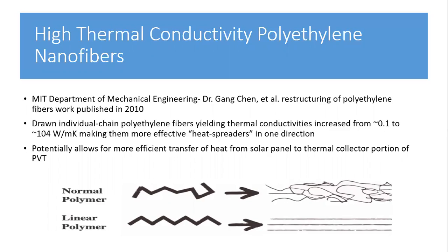This gives the polyethylene nanofibers very interesting material properties. Most importantly, this drives their thermal conductivity from the order of about 0.1 watts per meter Kelvin up to 104 watts per meter Kelvin, making it a much more effective heat spreader in one direction. This will decrease thermal resistance between the photovoltaic cell layer and the heat exchanger layer, causing more heat to be transferred, lowering the temperature of our PV cell and making it more efficient at converting sunlight into electricity, while also driving more heat toward the heat exchanger to do more work.